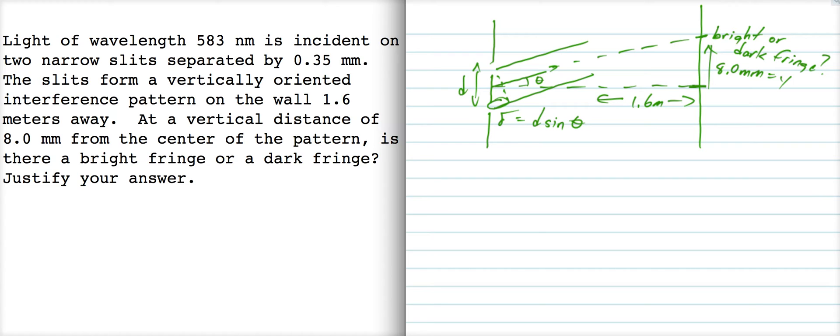You've got two different sources, and when those two sources meet over here on the wall, there's a difference in distance. This source down here on the bottom has traveled a little bit of extra distance, and if that little bit of extra distance corresponds to a half a wavelength, or one and a half wavelengths, or two and a half wavelengths, then there's going to be a dark fringe there because of destructive interference.